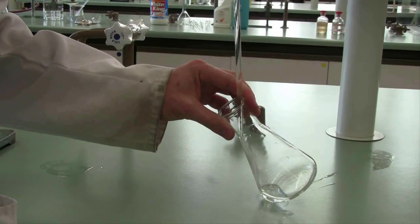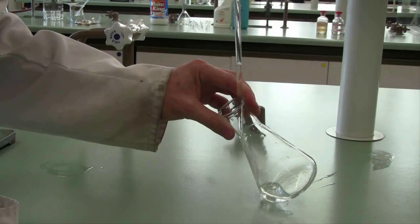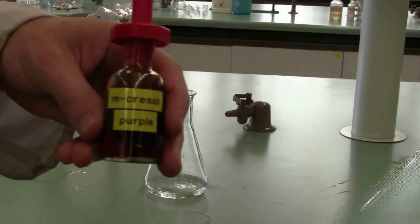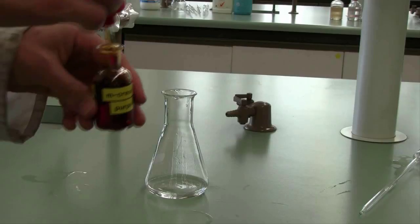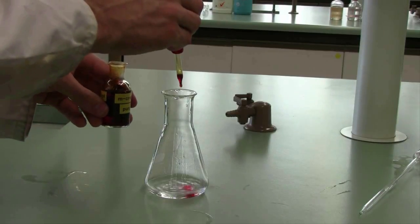First of all, deliver 20 ml aliquots of your acid solution into separate conical flasks. To each conical flask add three drops of metacresol purple indicator, and you'll then titrate each of these solutions to the metacresol purple endpoint.